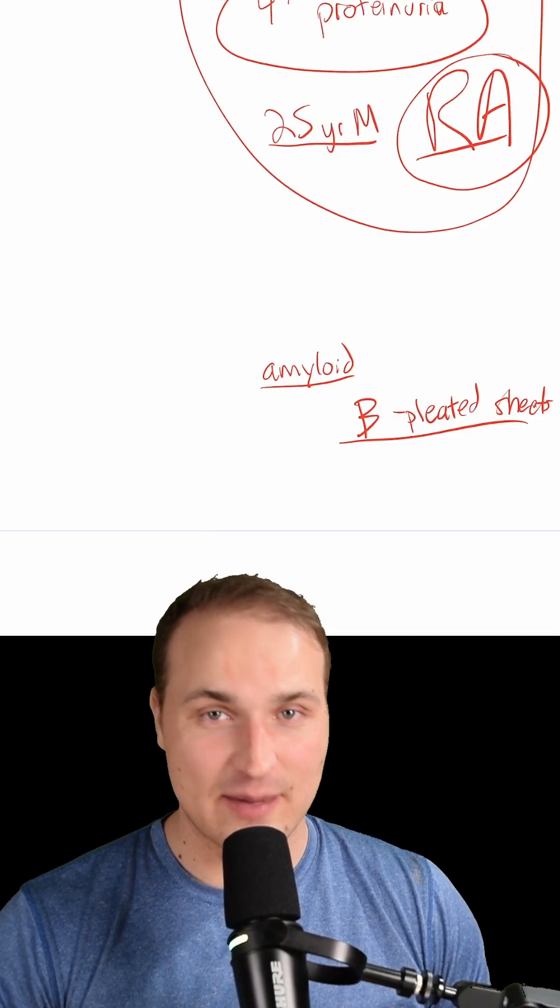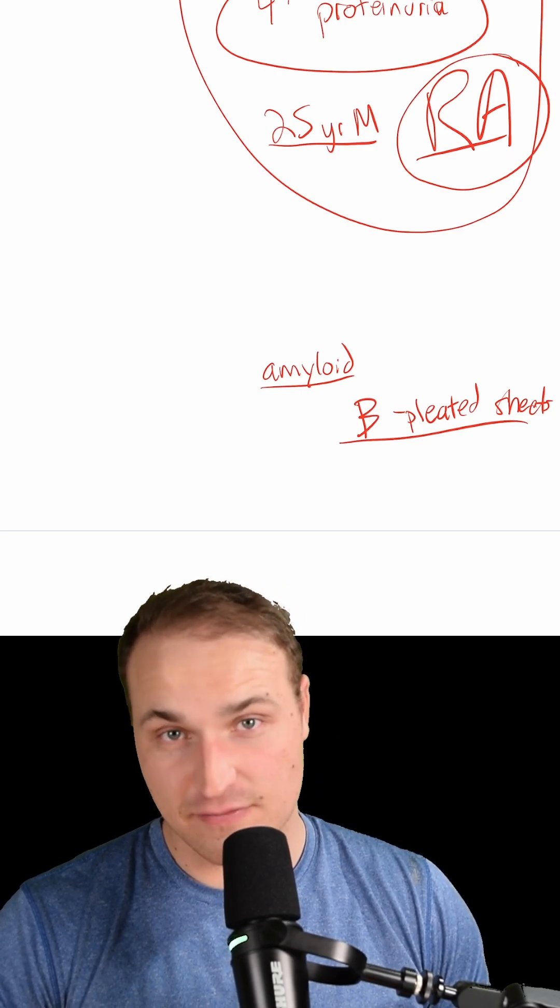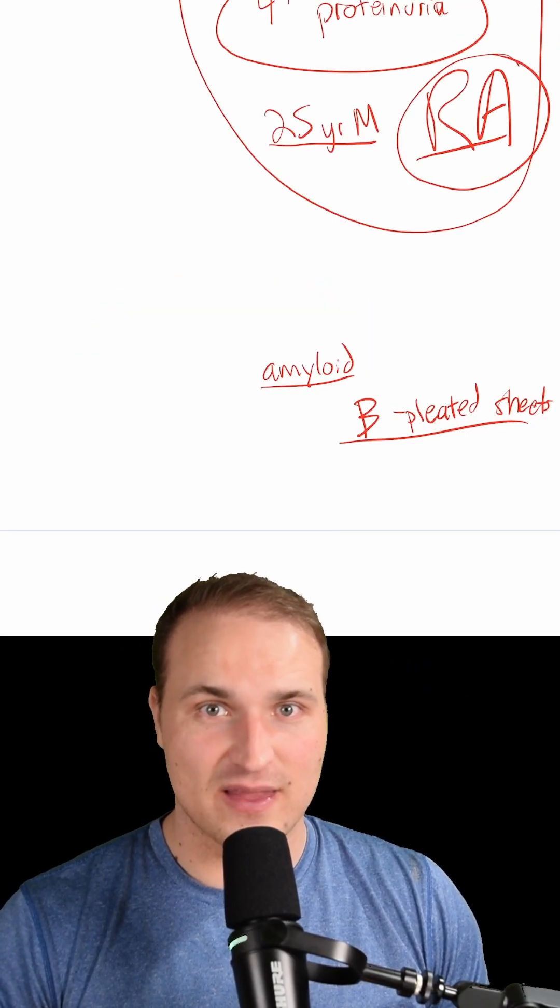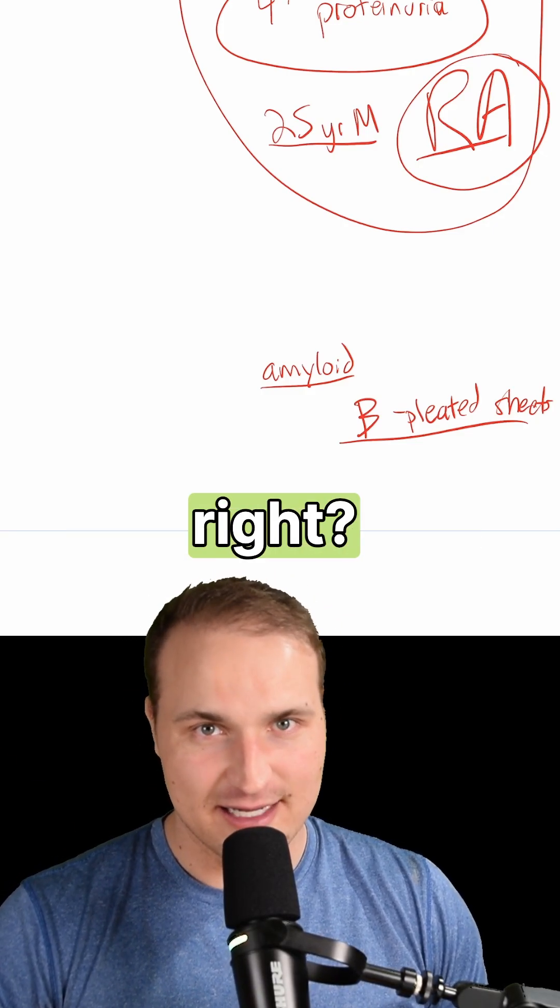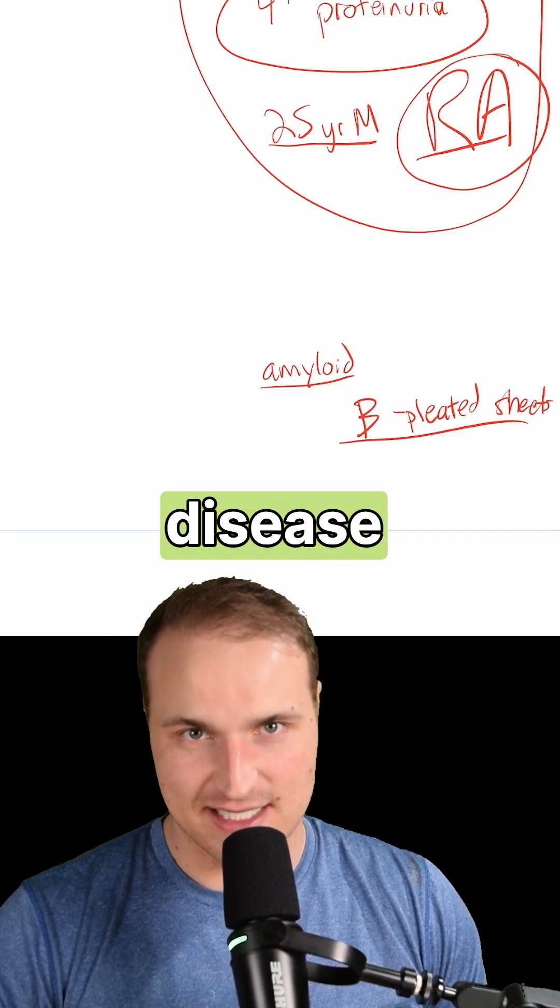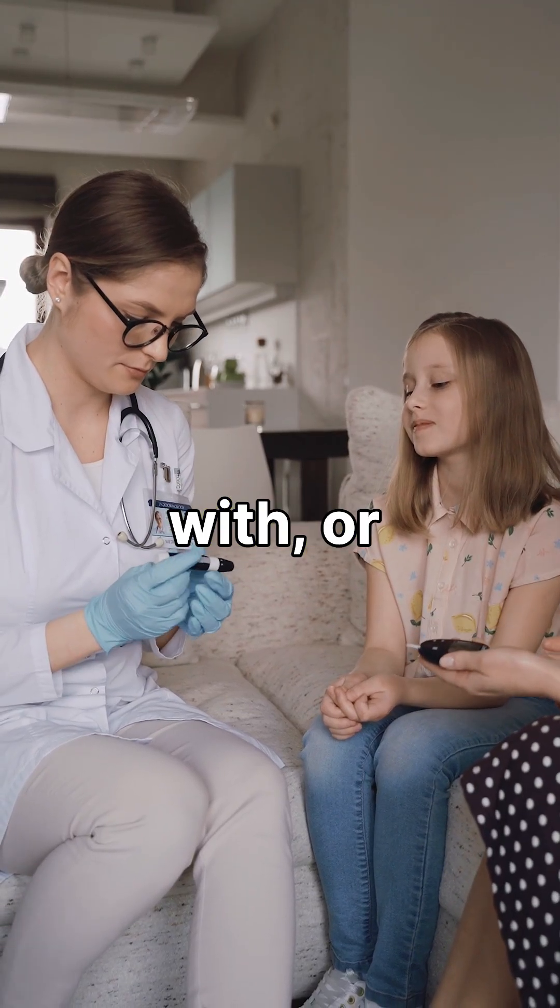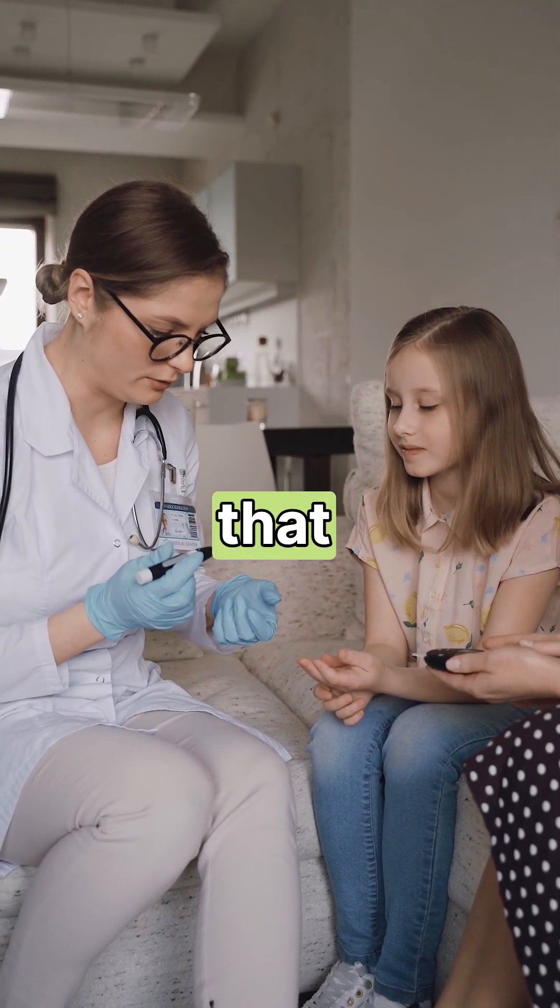It's not crescent formation—that's rapidly progressive glomerulonephritis. Not diffuse hypercellularity—that's post-streptococcal glomerulonephritis or lupus. Not IgA deposition—that's IgA nephropathy with recurrent hematuria after a URI. And not no abnormalities—that would be minimal change disease, seen in kids, Hodgkin's lymphoma, or NSAID use.